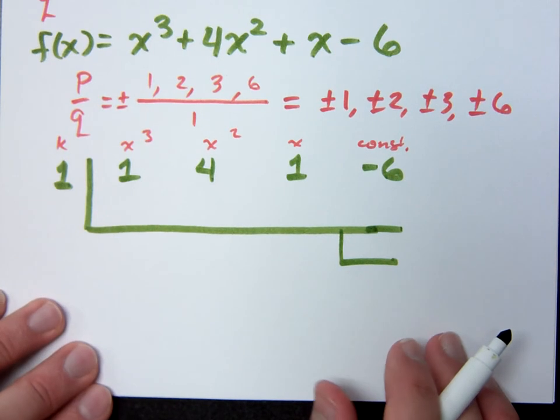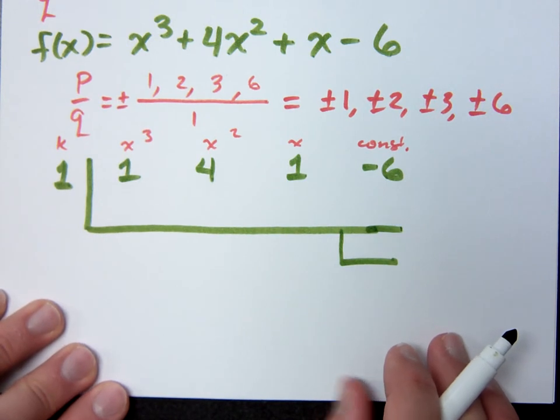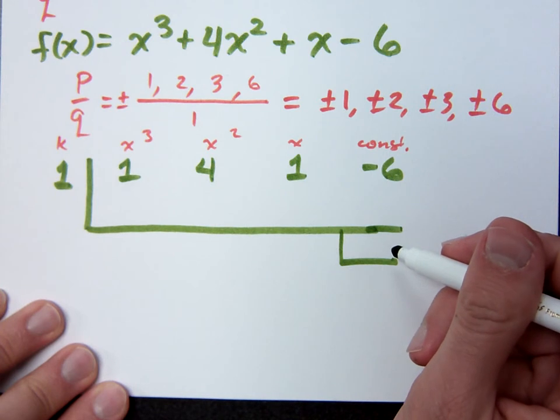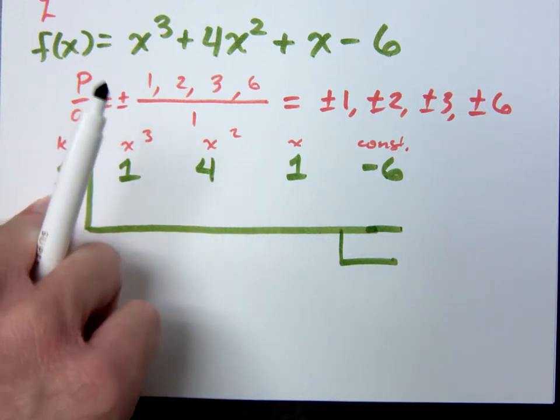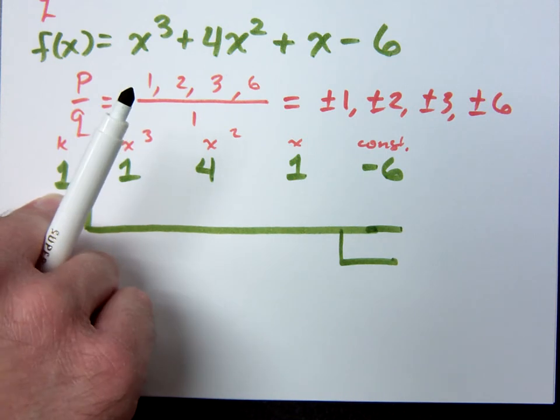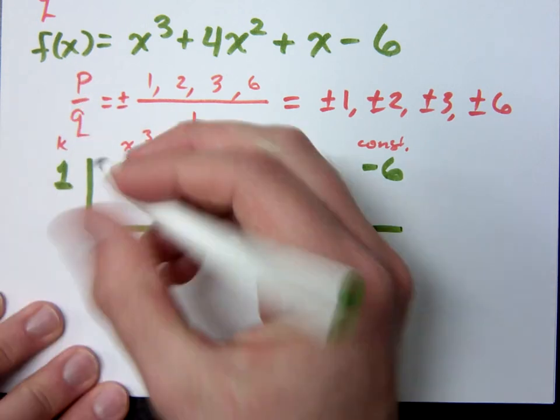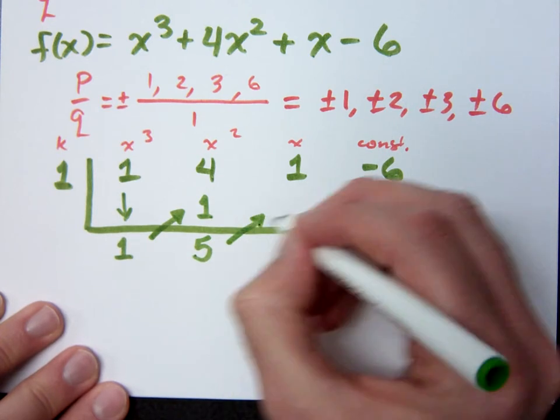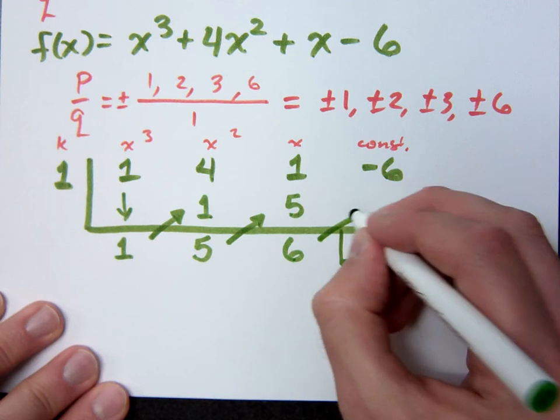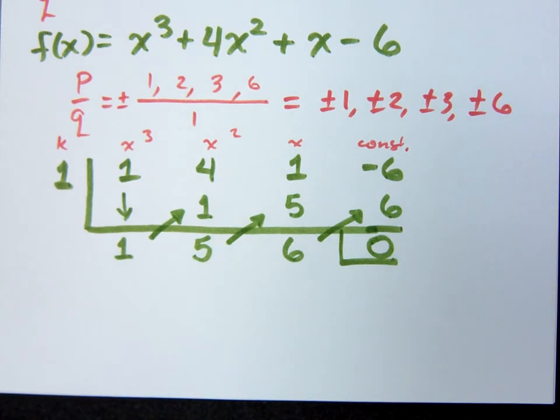Now, do synthetic division, and my remainder better be what? Zero. It's supposed to be zero. Didn't we say 1 gives us zero? We're dividing by 1, using the k value of 1. If this k value is 1, that means the factor we're looking at is x minus 1. So let's do the synthetic division. This gives me 1, multiply you get 1, add you get 5, multiply you get 5, add you get 6, multiply you get 6, my remainder is 0, and it better have worked.